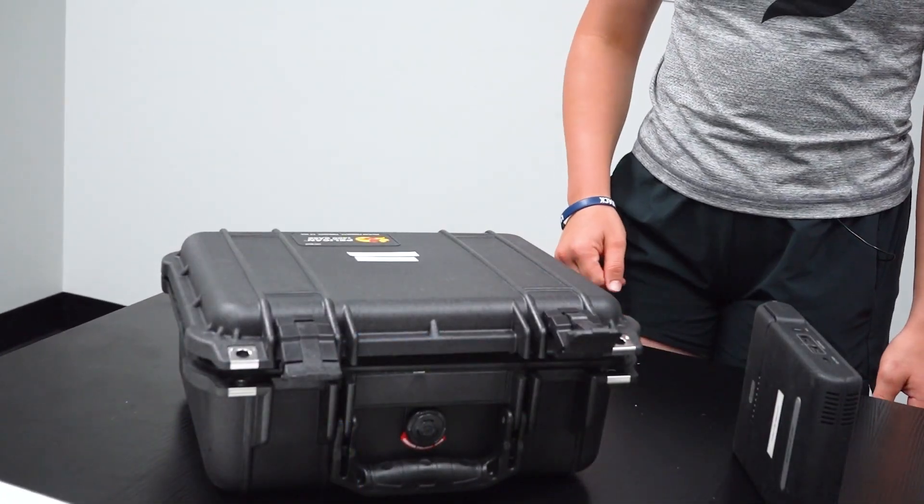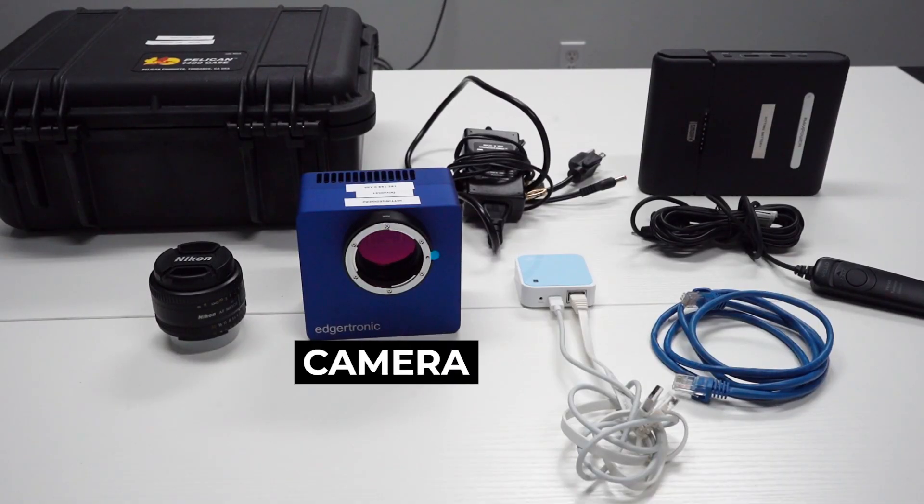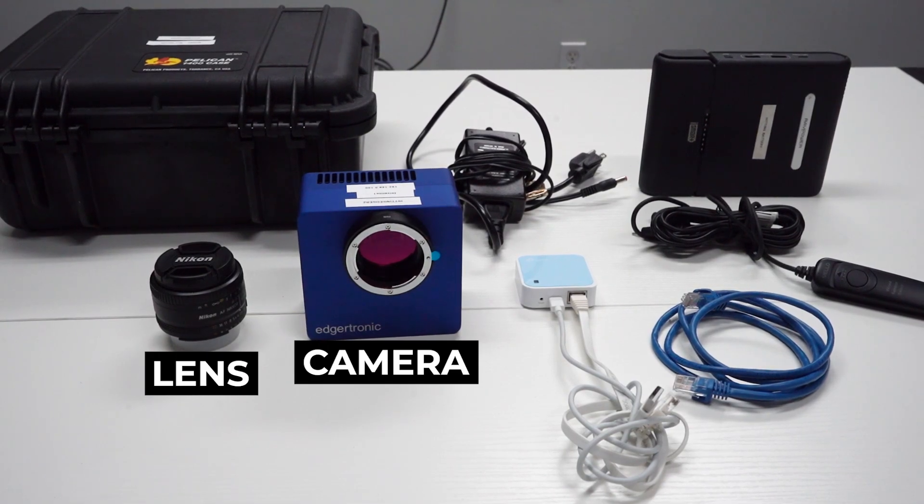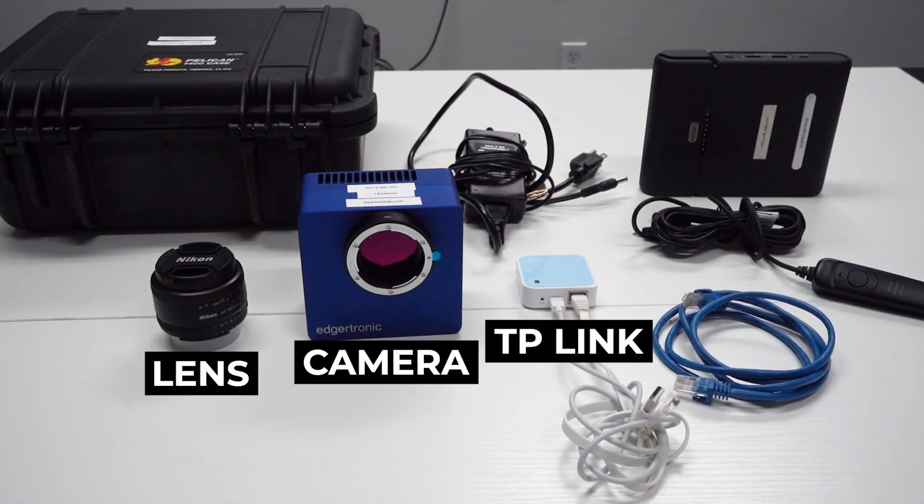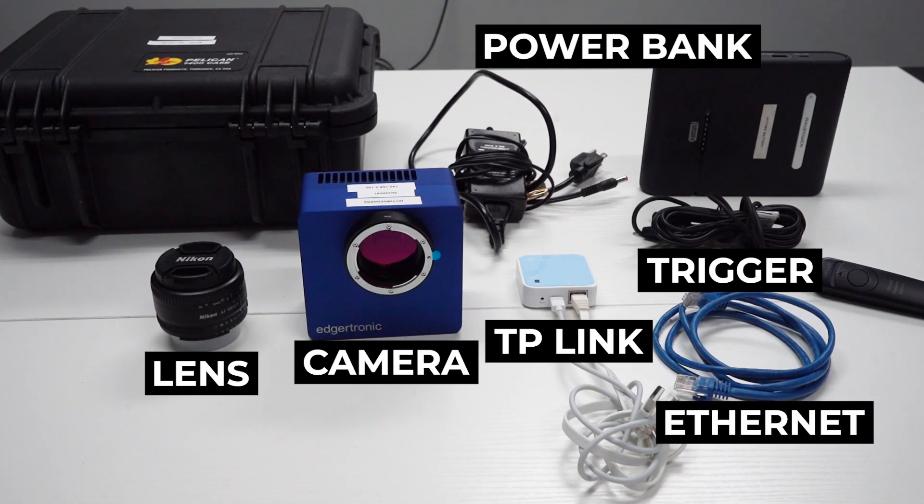When you first receive your Edgertronic, what it comes with is a Pelican case, a power bank, the Edgertronic camera, a Nikon 50mm lens, a TP-Link, a trigger and its extender, an Ethernet cable, and the power bank.